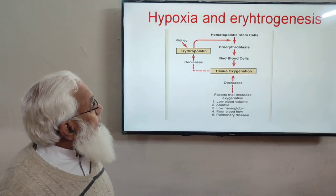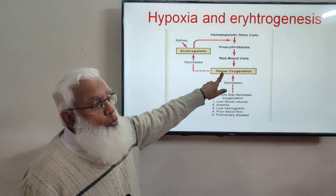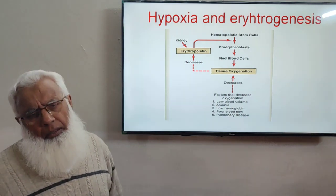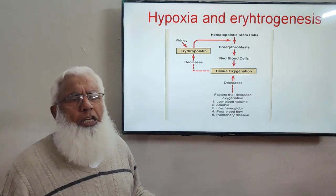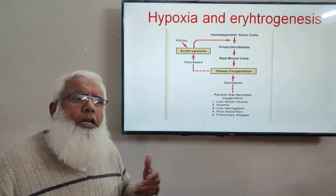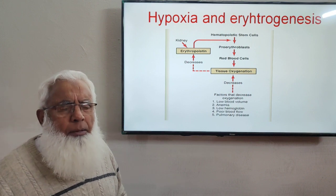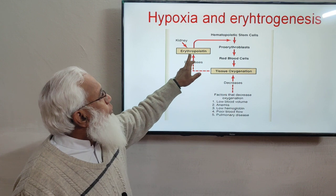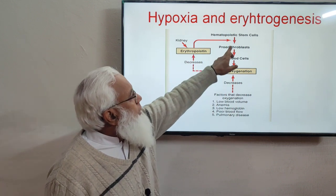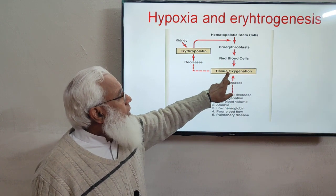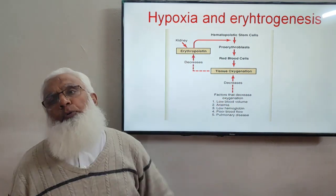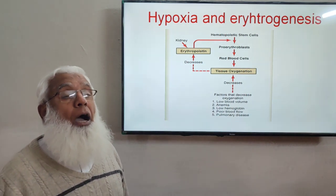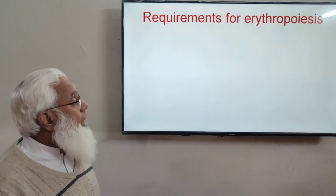Whenever there is hypoxia — due to high altitude, lung disease, or any cause — decreased tissue oxygenation leads to erythropoietin production, which stimulates erythropoiesis and increases RBC numbers. Conversely, when proper oxygenation is restored, erythropoietin production is inhibited. So hypoxia is the key regulator of erythropoietin and RBC formation.